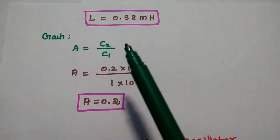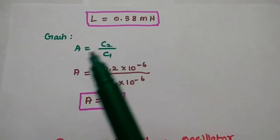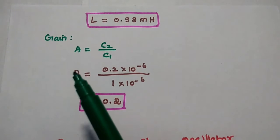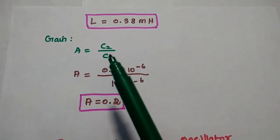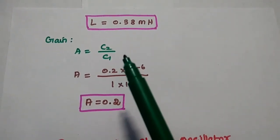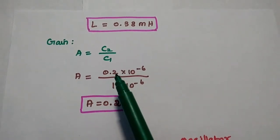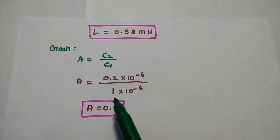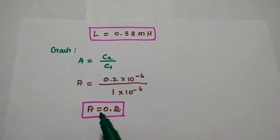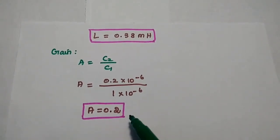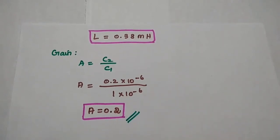From the gain calculation using C2 / C1 = 0.2 × 10⁻⁶ / 1 × 10⁻⁶, we get the answer as 0.2. So this is the gain of the given Colpitts oscillator.